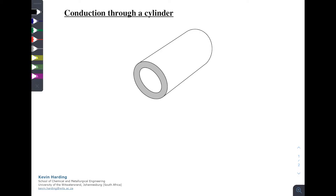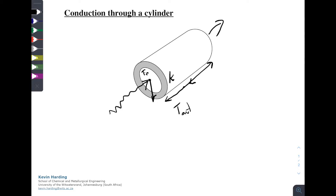We can also have conduction through a cylinder or a pipe. We might have fluid that flows in through this pipe and out through the other side. If we have conduction, we will again have thermal conductivity k through a length of pipe L. On the inside of this pipe, T_in is the temperature, on the outside is T_out. The outside radius is r_o and the inside radius is r_i. In this example we'll assume that the water flowing in is hot, so the conduction is going to come out of this pipe in a radial fashion.